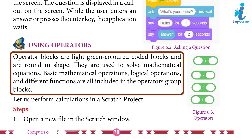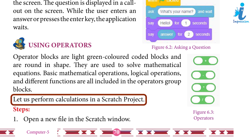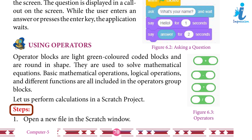Using operators: Operator blocks are light green color-coded blocks that are round in shape. They are used to solve mathematical equations. Basic mathematical operations, logical operations, and different functions are all included in the operator group blocks. Let us perform calculations in a Scratch project.